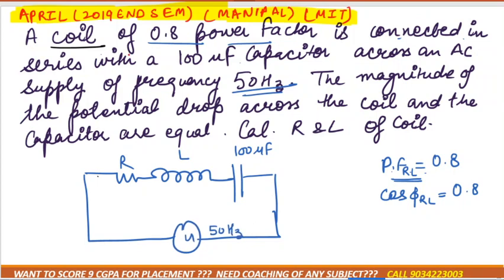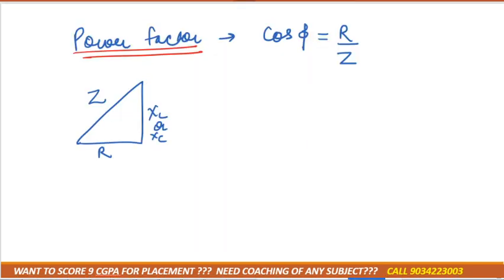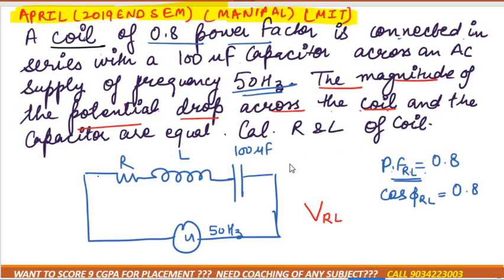Now the problem gives us a statement: the magnitude of the potential drop across the coil equals the potential drop across the capacitor. Potential drop across the coil means it is across R and L — coil is always the combination of R and L. So the potential drop across the coil, that is V_RL, equals V_C.